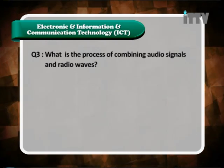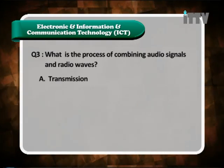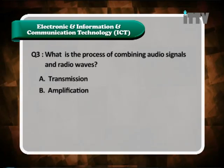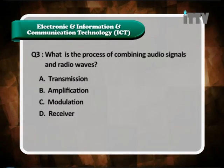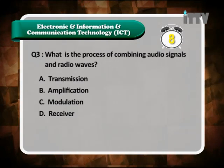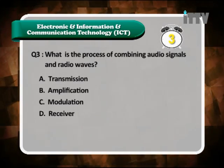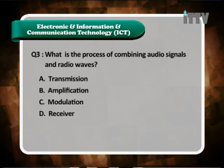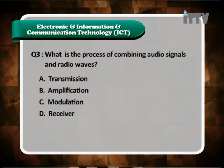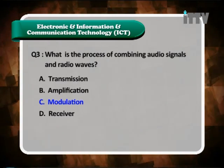Question 3: What is the process of combining audio signals and radio waves? A. Transmission. B. Amplification. C. Modulation. D. Receiver. The question asks what the process of combining audio signals and radio waves is called. The answer is C — Modulation.